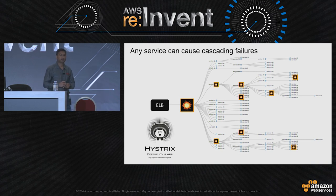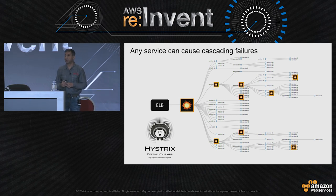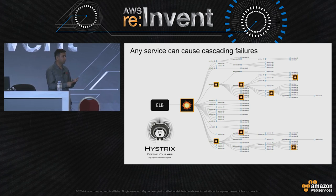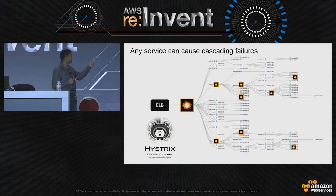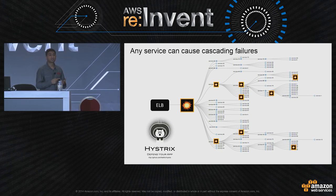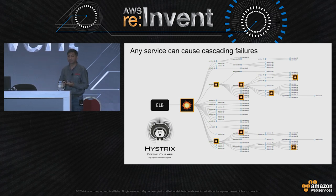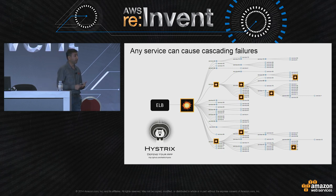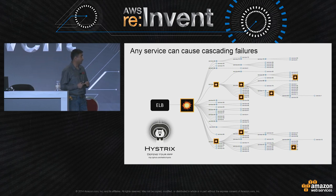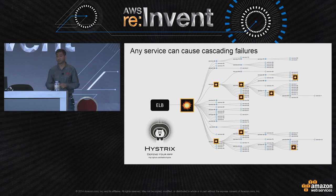What did we do to prevent that? We created Hystrix — our fault tolerance library — which has all the goodness of fallbacks, load shedding, and bulkheading. It prevents a single service from taking out our whole system. But Hystrix also needs tuning and configuration — you need to tune the thread pools and ensure that the fallbacks work. There's also a great talk today at 3:30 about massive load at our edge and how we tackle that if you want more details.